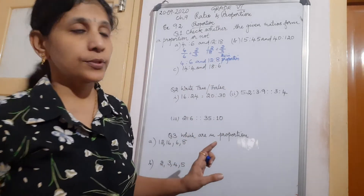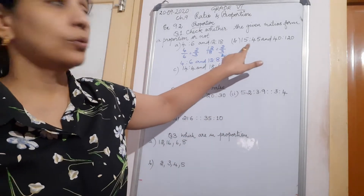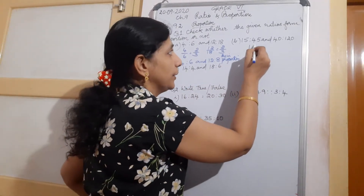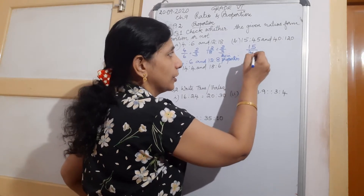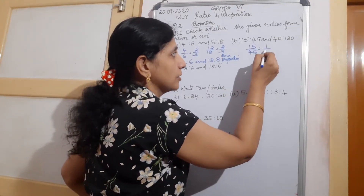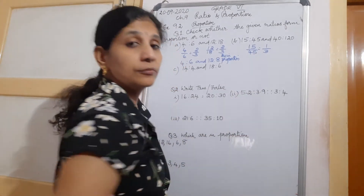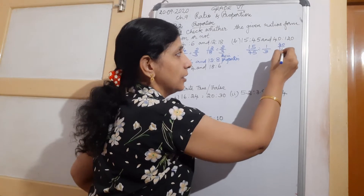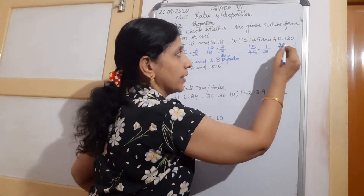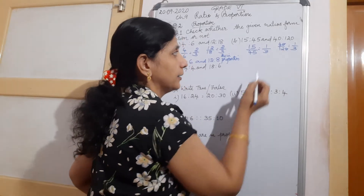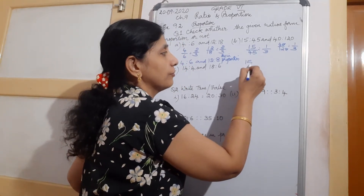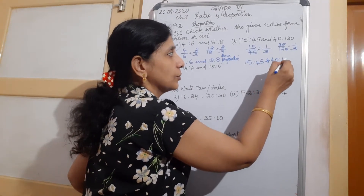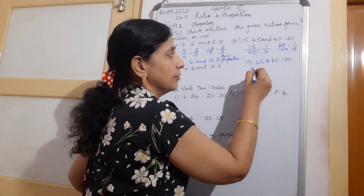Now the next question is 15:45 and 40:120. We calculate 15 by 45 — one 15 is 15 and three 15s are 45, giving 1 by 3. And 40 by 120: zeros cancel, giving 4 by 12, which is 1 by 3. So 1 by 3 equals 1 by 3, and therefore 15:45 and 40:120 are in proportion.